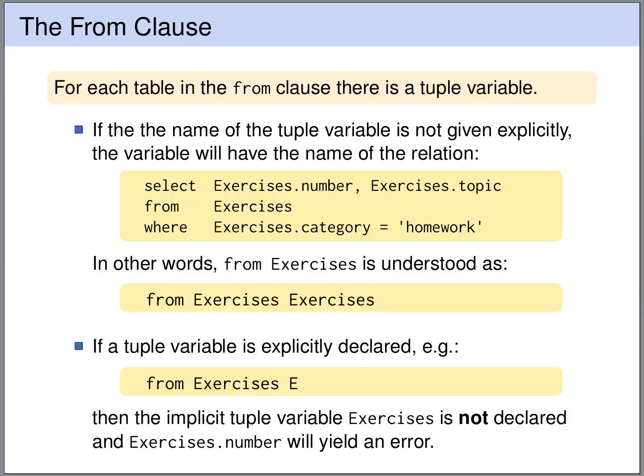For every table that is queried in the FROM clause, one tuple variable is defined. So for instance, in this FROM clause, we say that we want to query the table exercises. And we give the tuple variable that iterates of the rows and exercises the name E. In this FROM clause, we only say that we want to query the table exercises. But we do not give a tuple variable name for this table.